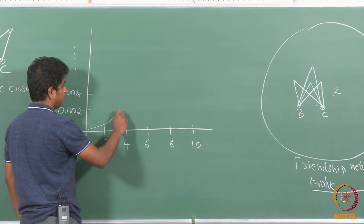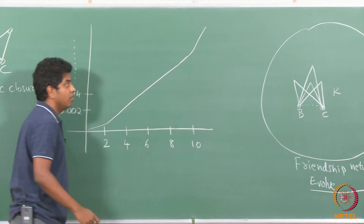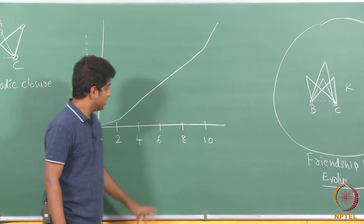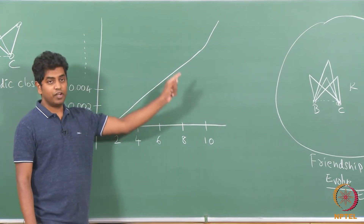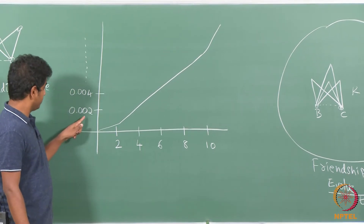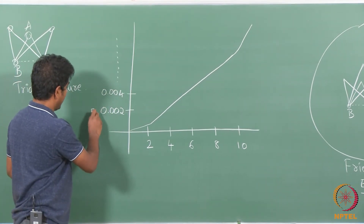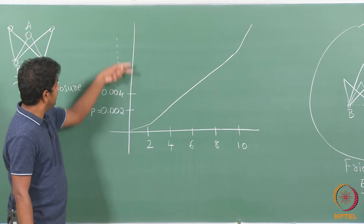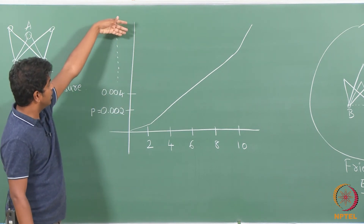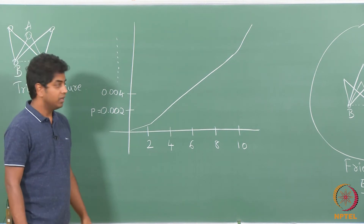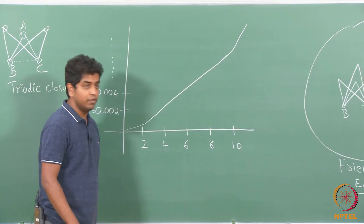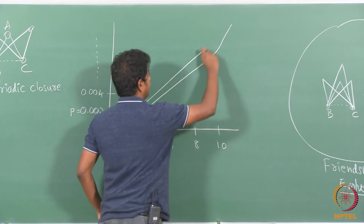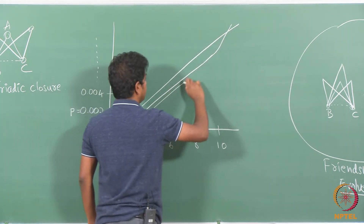They observe that the plot looks very linear, which means an increase in the number of common friends results in an increase in the probability of them becoming friends. Although the probability is very small — around 0.0002 up to 0.008 or 0.010 — the relationship looks linear and they were successful in fitting it to a linear curve.